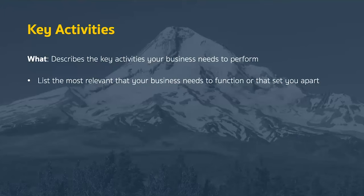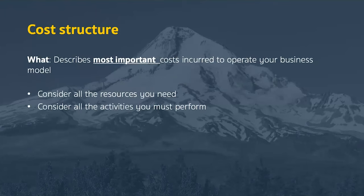Key activities describe the activities that your business model needs to perform. Focus only on the ones most relevant to your business — if you're Intel and you make computer chips, your key activity is making and selling computer chips. Cost structures describe only the most important costs needed to operate your business. Capture costs that are the most relevant — you don't need to include every legal expense or office supply, only the things really important to running the core of your business model and what sets you apart from competitors.